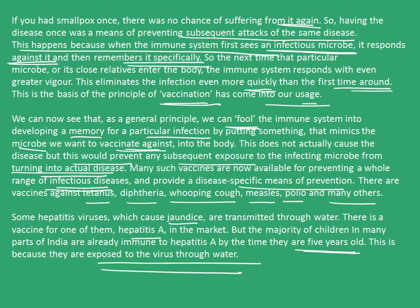So in this video we saw the principles of treatment, the principles of prevention, and also how the immune system develops a memory in order to stop the disease from happening again. With this, I end the chapter on why do we fall ill. Thank you.